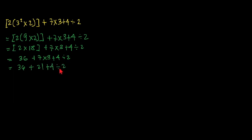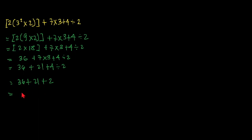The next step, we are going to do the division because division is a higher order operation compared to addition. So we have 36 plus 21, then 4 divided by 2, which is plus 2. Then we add this all together: 36 plus 21 is 57, plus 2, and that will be equal to 59. So this is our answer.